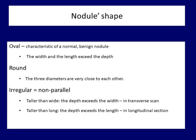The shape of a usual regular nodule is oval, following the normal ovoid — or more precisely, rotational ellipsoid — shape of a thyroid lobe. The more round the shape, the greater the likelihood of papillary cancer. There are two forms of irregular shape; in both cases the depth, that is the anterior-posterior diameter, exceeds its counterpart: the width in transverse section, and the length in longitudinal section.